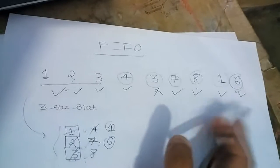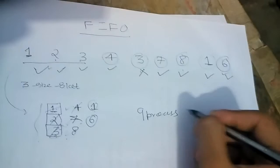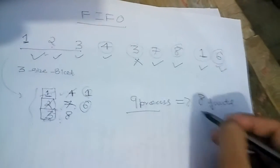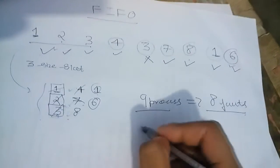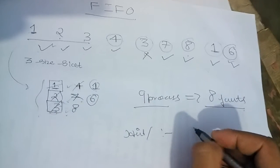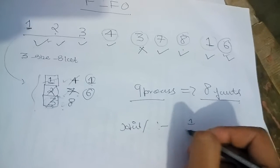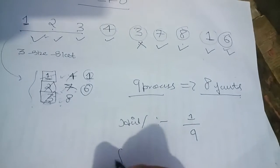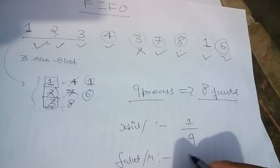So 1, 2, 3, 4, 5, 6, 7, 8. Out of 9 processes, we get 8 faults. So here the hit ratio, or success ratio, is 1 by 9. Then the fault ratio, or miss ratio, is 8 by 9.